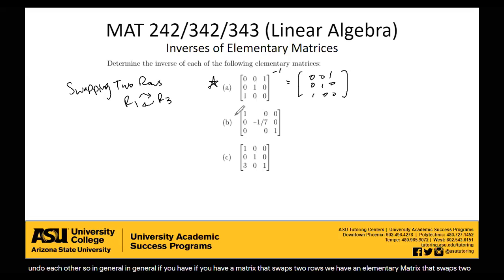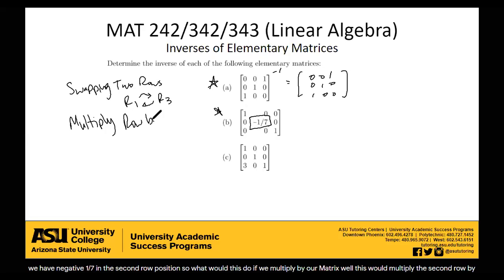So what's this? This is the identity matrix, except we have negative one-seventh in the second row position. So what would this do if we multiplied by our matrix? Well, this would multiply the second row by a non-zero constant. So that's what this elementary row operation is corresponding to. Multiply a row by non-zero constant. And in this case, we're specifically taking the non-zero constant negative one-seventh and multiplying it by row two.